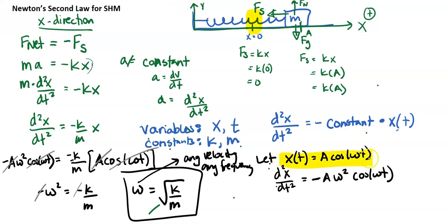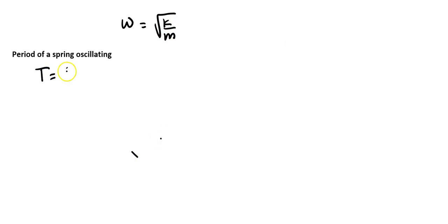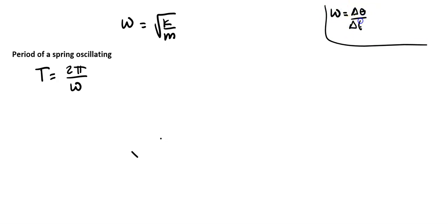We were choosing x(t) = A·cos(ωt) because when we take the derivative twice, we need two constants. Now let's prove the period of a spring oscillating. We just proved ω = √(k/m). We know the equation for period is T = 2π/ω. To see why: angular velocity is dθ/dt, something going around once covers 2π radians, and the time for one revolution is the period, so ω = 2π/T, or T = 2π/ω.